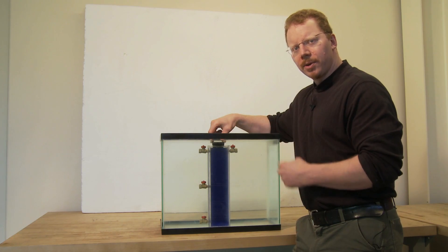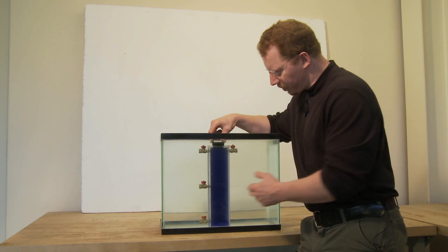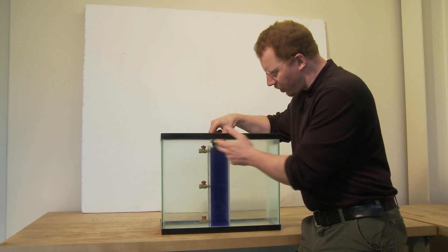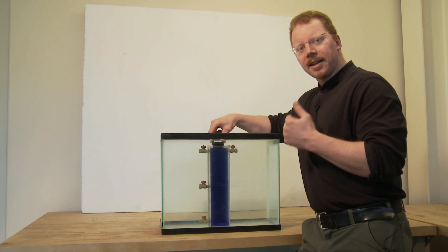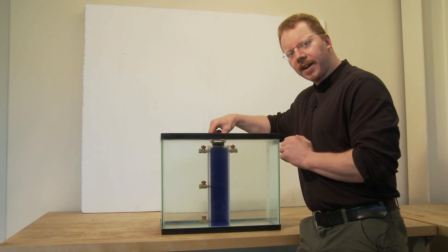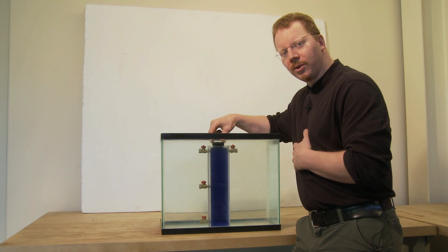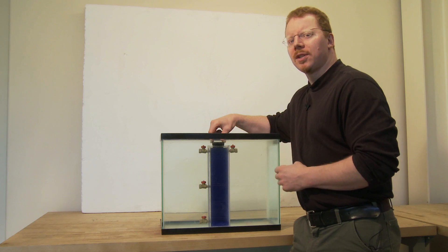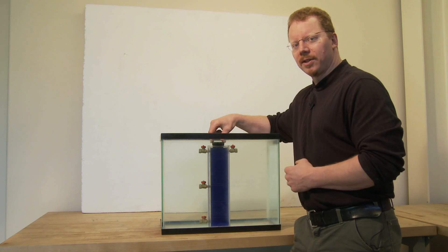Now it takes two things to produce air leakage. It takes holes, and we have the potential for holes here with the ports in our box. And it takes a pressure difference across those holes to provide the incentive for air to move through the hole. And this is where it gets interesting. How do we get a pressure difference?